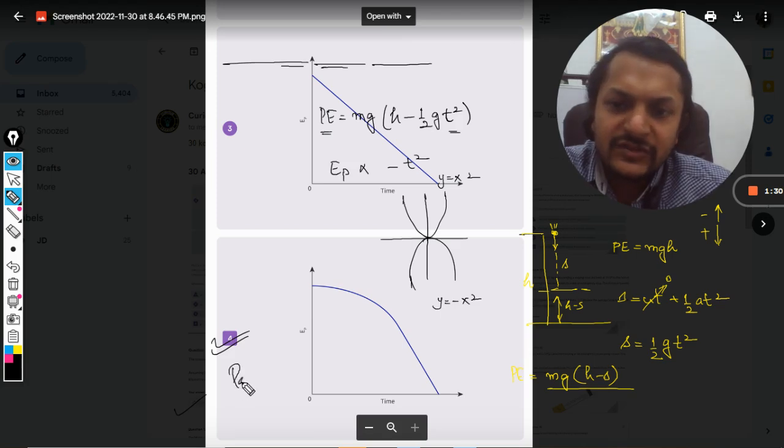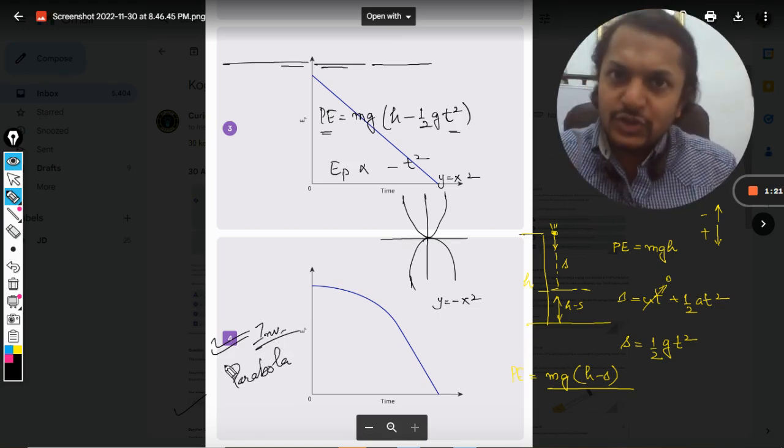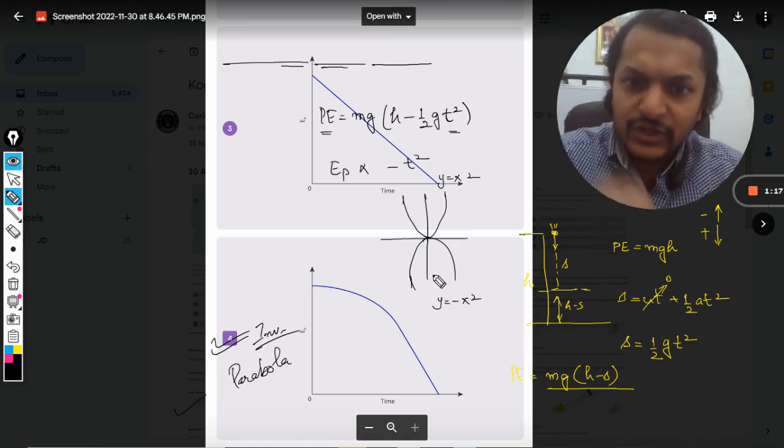At the end of the day, it is going to be a parabola, the inverse parabola, you can say. So whether the answer is given as 4 or as 2, your answer will be the inverse parabola.